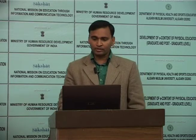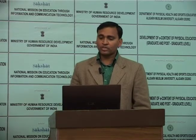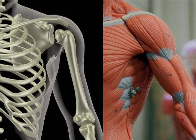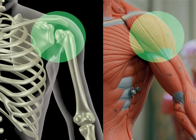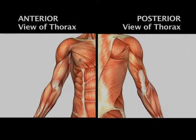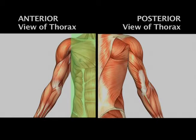Now I am going to discuss the muscles of the shoulder joint — the muscles which control mobility at the shoulder joint. The muscles of the shoulder joint are located between the shoulder girdle and the bone of the arm, the humerus. They can be divided into three compartments: the muscles of the anterior compartment, the muscles of the posterior compartment, and the muscles of the lateral compartment.